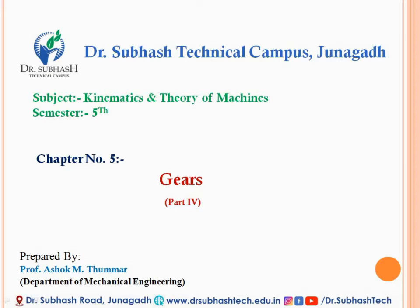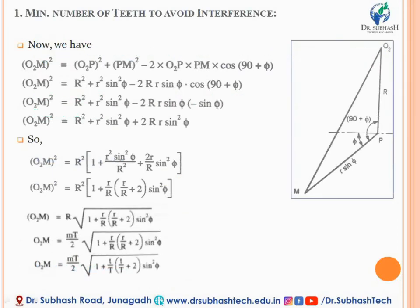Up to now, we have discussed about the chapter gears — different types of gears, gear trains — and we have also discussed relations like length of path of contact, length of arc of contact, numbers of terminology, and the contact ratio. Now it is time to discuss a bit ahead. The first and most important topic we are going to discuss is the minimum number of teeth to avoid interference.